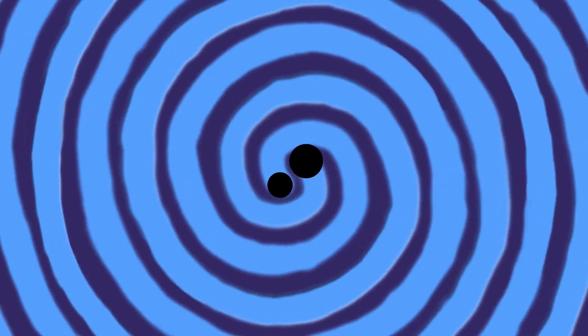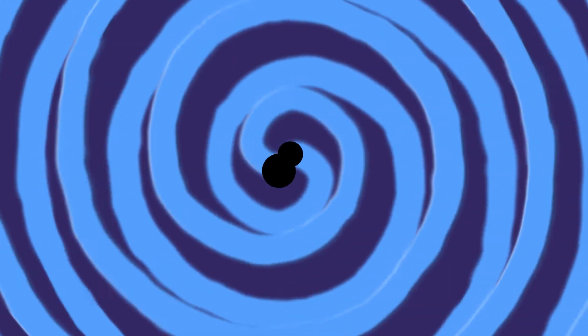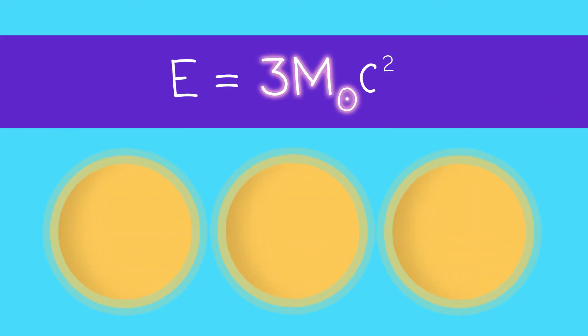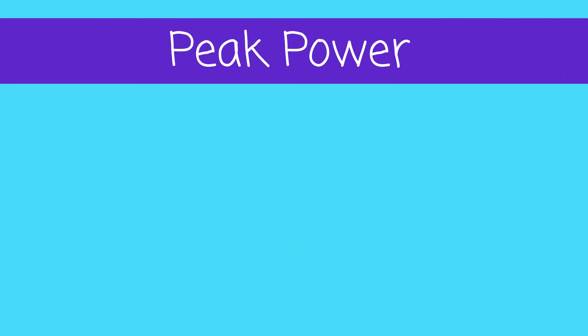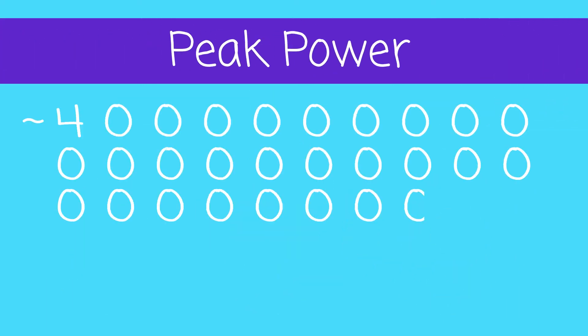As the black holes orbit, they lose energy through gravitational waves and they spiral in towards each other quicker and quicker. The energy released from the collision in the form of gravitational waves was equivalent to three solar masses. This was hundreds of times more than the energy released from any other event that had been observed. The peak power from this collision, nearly 40 trillion trillion trillion trillion watts, was more power than the combined light of all the stars in all the galaxies in the entire visible universe. All that power was released in a fraction of a second from this one single event.